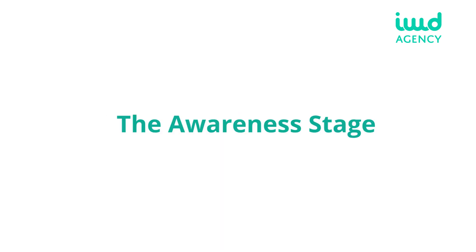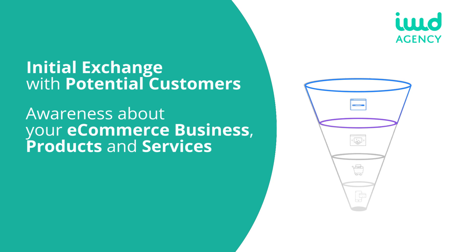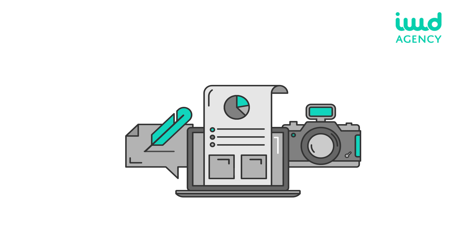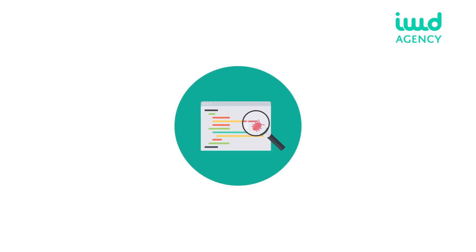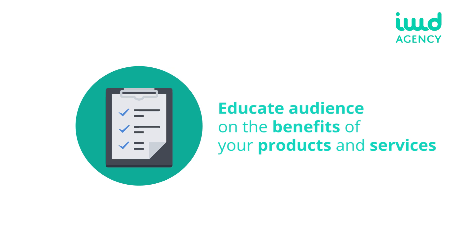Number one: the awareness stage. The awareness stage is at the top of the funnel and represents your initial exchange with potential customers. They become aware of your ecommerce business, your products and services, and the benefits and solutions you offer to their problems. The information and content you deliver to potential users are especially important at this stage because it may highlight a problem consumers are unaware of. Convincing content identifies your target audience, introduces your brand identity, and offers solutions to potential problems. The best strategy is to deliver valuable information focused on educating your audience on the benefits of using your products and services.